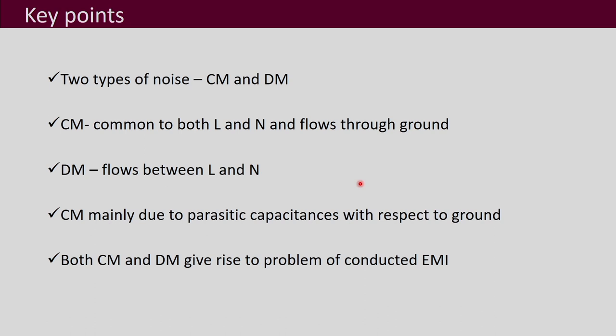These are crude generalizations, so do not take them as exact analytical statements, but in general you can use them. The key points of this lecture are: the two types of noise are common mode and differential mode; common mode is what is common to both line and neutral and its return path is through the ground, whereas differential mode is the difference between line and neutral. Different parasitic elements present in the circuit are responsible for common mode and differential mode noise problems. Both give rise to the problem of conducted EMI and so they must be taken care of while designing the power electronic converter. Thank you.